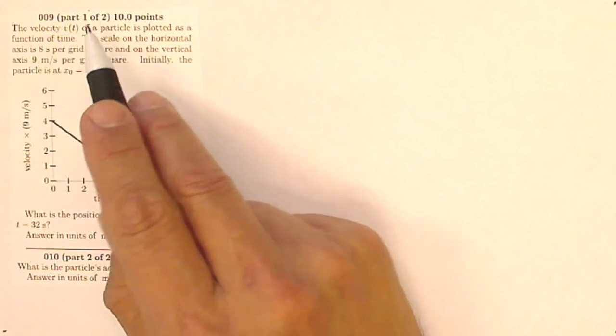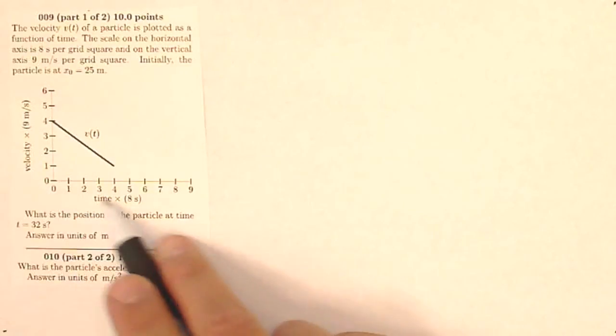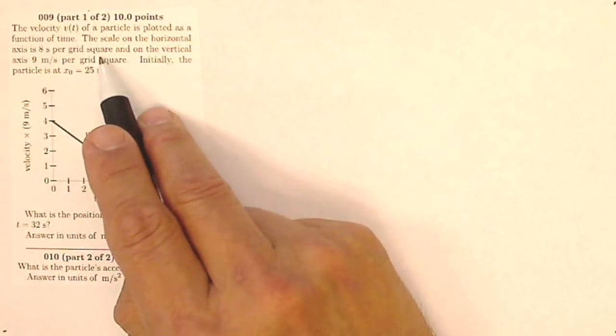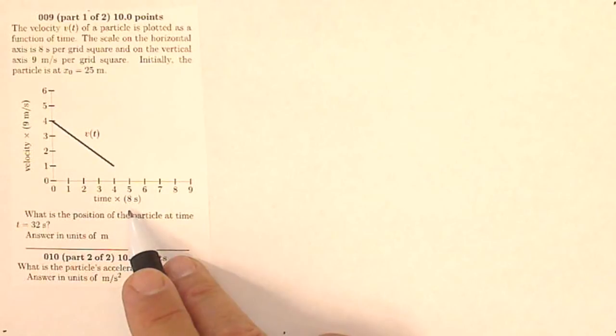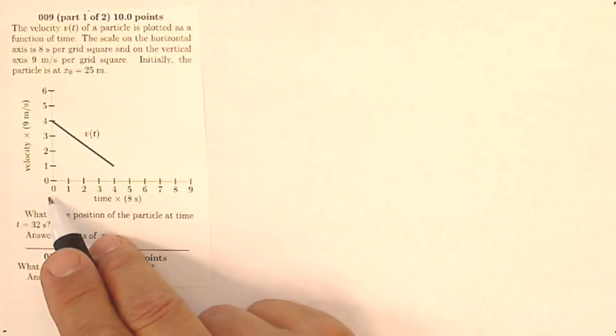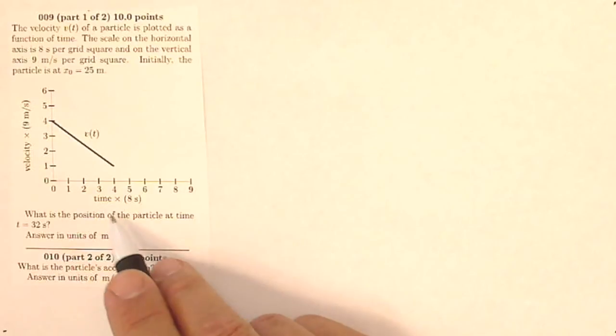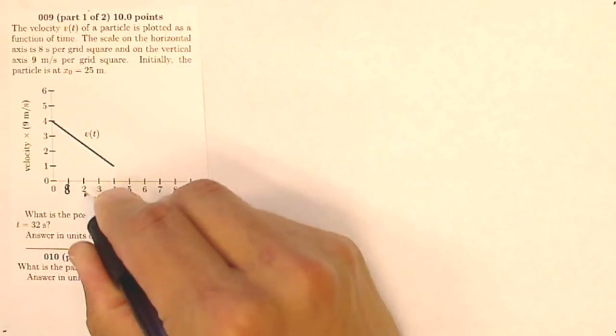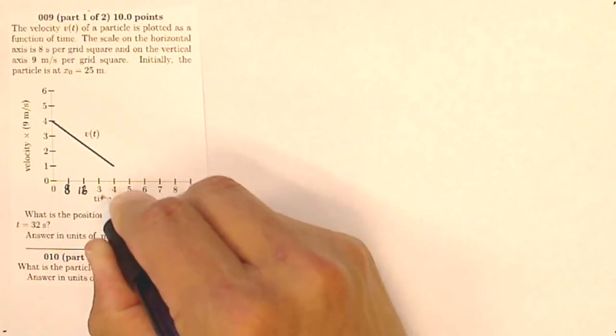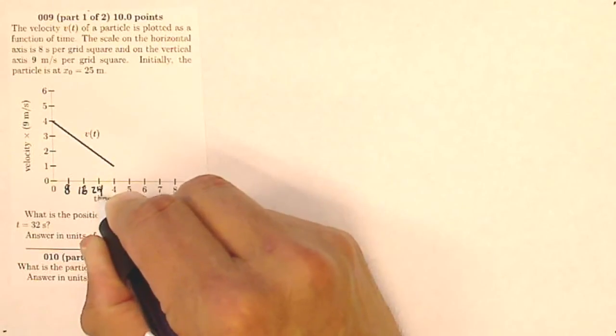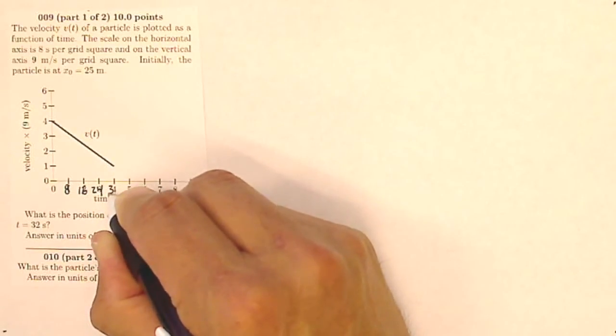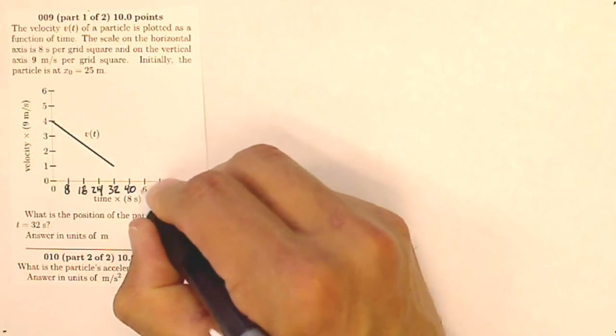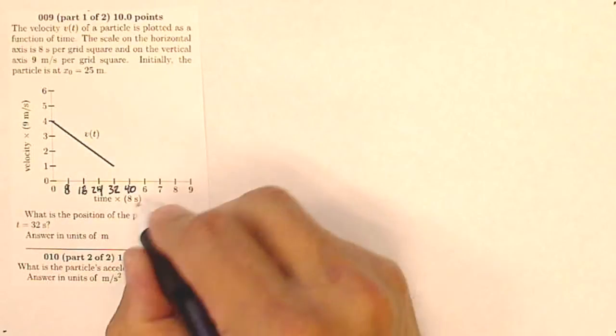The velocity of a particle is plotted as a function of time. In other words, I've got a velocity time graph. The scale on the horizontal axis is 8 seconds per grid square. What does that mean? Oh, what that means is that this isn't 1, 2, 3, 4, 5 seconds, but it says time times 8 seconds. So this isn't really 1 second, this is 8 seconds. This isn't 2 seconds, this is 16 seconds. This isn't 3 seconds, it's 24 seconds. This isn't 4 seconds, it's 32 seconds. And this isn't 5 seconds, it's 8 times 5 is 40 seconds.